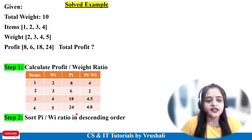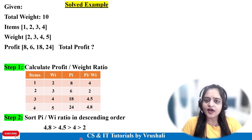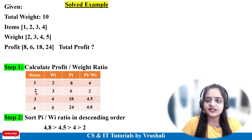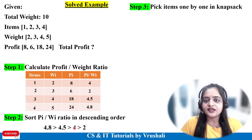The second step is to sort the profit-weight ratios in descending order. The highest is 4.8, then 4.5, then 4, then 2. We sort this data because you have to add items into the bag as per the profit-weight ratio — first adding item 4 with ratio 4.8, then item 3, then item 1, then item 2.